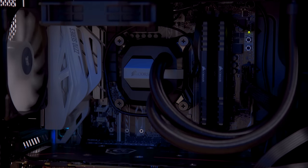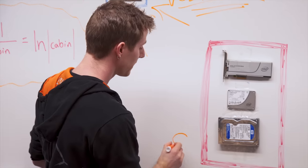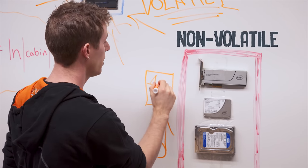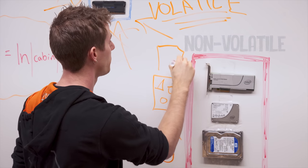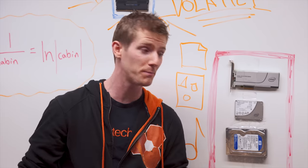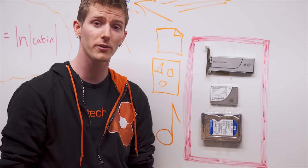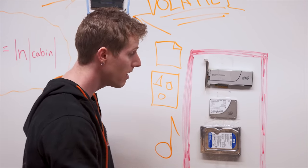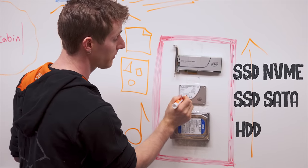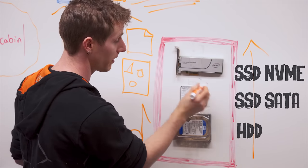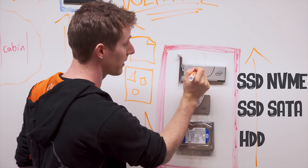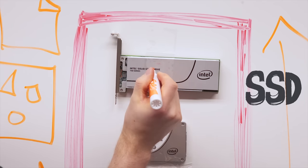Number two is that DRAM is what's known as volatile — so when the system loses power, the data is gone. That is why we have non-volatile storage, where your pictures, files, or anything you don't want to disappear every time you turn off your computer goes. The most common types of non-volatile storage, in order of speed, are the hard disk drive or HDD, the solid-state disk or SSD with a SATA interface, or more recently an NVMe SSD like the 750 series right here.